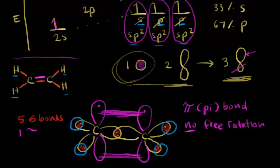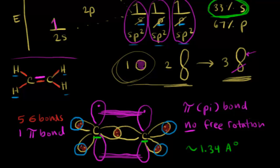We have a total of one pi bond in the ethylene molecule. The distance between the two carbons turns out to be approximately 1.34 angstroms, which is shorter than the distance between the two carbons in the ethane molecule. For ethane, the distance was approximately 1.54 angstroms, so a double bond is shorter than a single bond. One way to think about this is the increased s character — this increased s character means the electron density is closer to the nucleus, making the lobe shorter and decreasing the distance between the two carbon atoms.